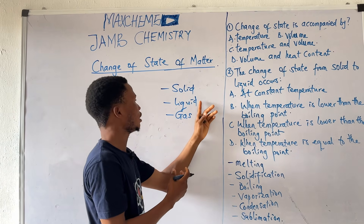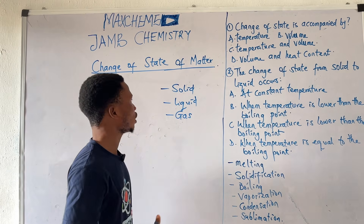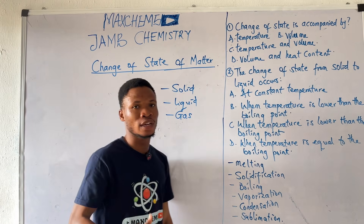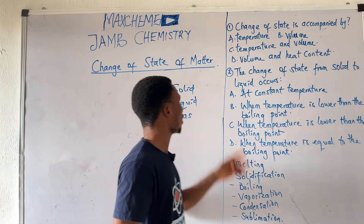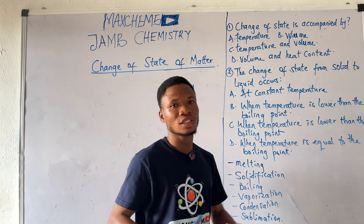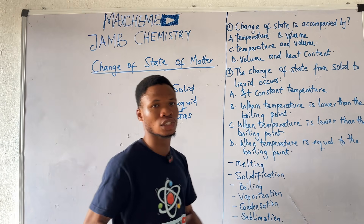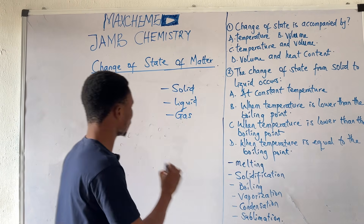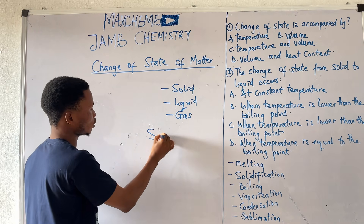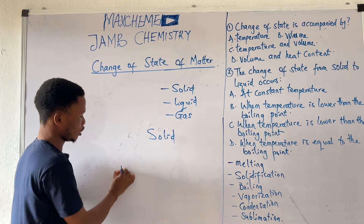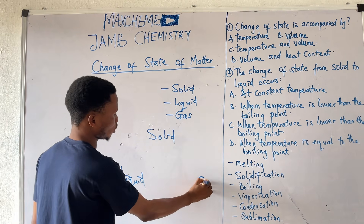Or it might be liquid, then we will change it to either solid or gas. So the change of the phase of a substance from one phase to another without the change of the composition is the change of state of that substance. We have the solid phase, the liquid phase, and the gaseous phase.